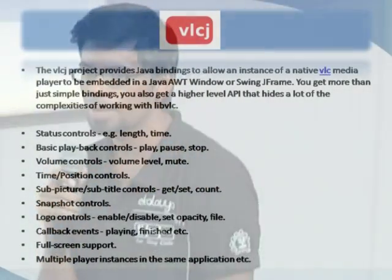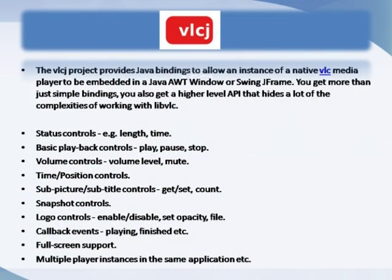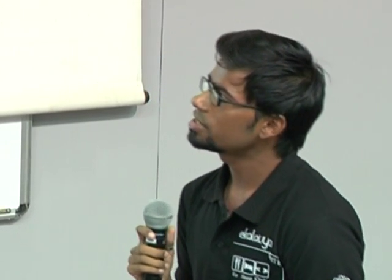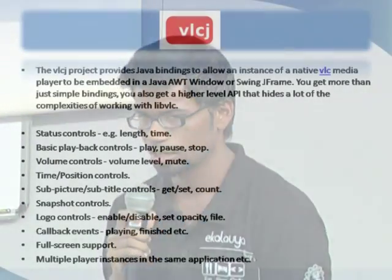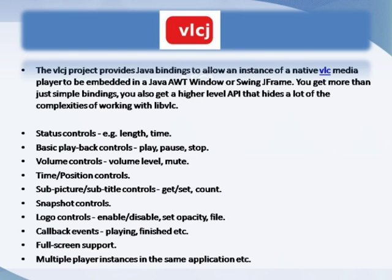The project used in the VLC part is VLCJ, hosted by Captia Software, a company in the UK. It provides Java binding for the VLC player and the facility to join the native VLC player to the Java application. It also has various functionalities: volume control, snapshot, full-screen support, and multiple player instances. There is a lot of blog and documentation available at Captia Software's website and on Google Code and Wiki.